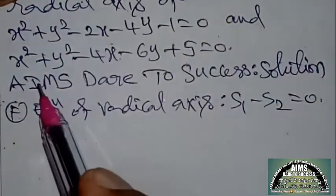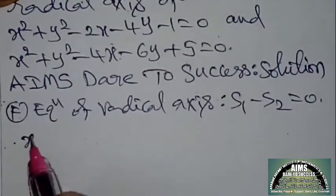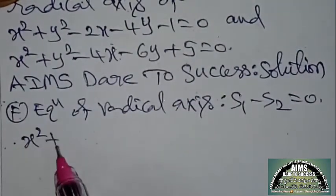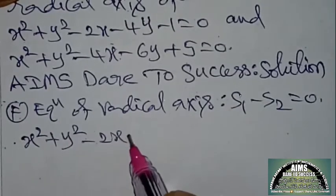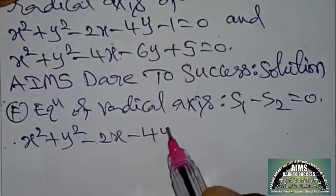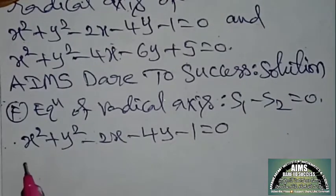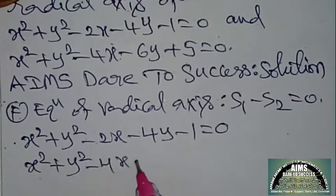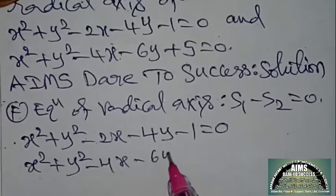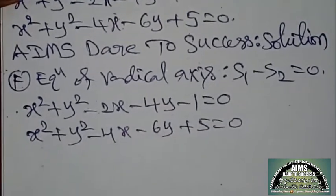You can check — x² and y² coefficients, both are the same. So you can take the relation: x² + y² − 2x − 4y − 1 = 0 and the second circle x² + y² − 4x − 6y + 5 = 0.